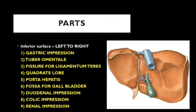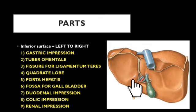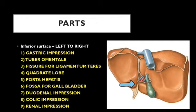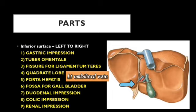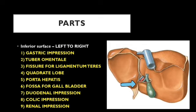Now for the inferior surface, also called the visceral surface, viewed from left to right. The leftmost impression is the gastric impression, which is the largest. Next to it on the right is an elevated part for the tuberoomental part of the pancreas. Next is a cleft in the inferior surface with an anterior lip, posterior lip, and floor. The floor of this fissure lodges the ligamentum teres — a connective tissue formed by the remnant of the left umbilical vein of fetal life.